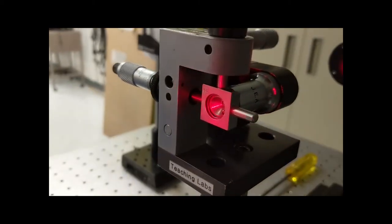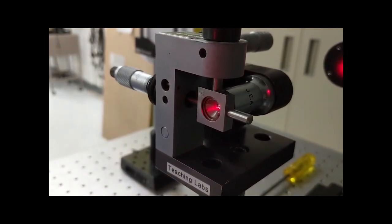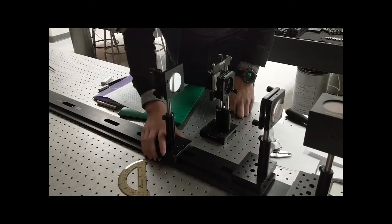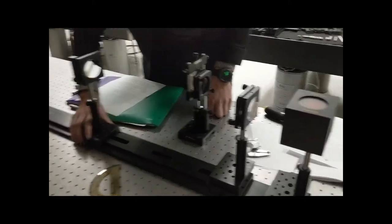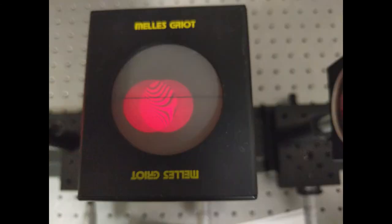If the wavefront curvature is matched to the radius of curvature of the mirror, then the beam should exactly propagate the same way that it came. Therefore, we can tell that we are close when we see the focus spot reflected back onto the plane of the spatial filter. Here, we measure the wavefront to have a radius of curvature of 49.5 centimeters.